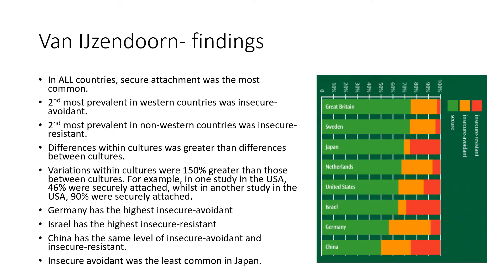Looking at Van Ijzendoorn's findings — on the right-hand side there is a graph showing secure, insecure avoidant, and insecure resistant results. In all countries, secure attachment was the most common. The second most prevalent in western countries was insecure avoidant — you can see that for Great Britain and the United States. The second most prevalent in non-western countries was insecure resistant — for example in Japan and Israel. Crucially, differences within cultures were greater than differences between cultures; variations within cultures were 150 percent greater than those between cultures.